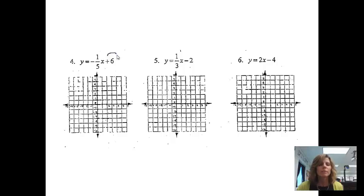Number 4, I'm going to circle the 6. I'm going to start up at 6. The rise is negative 1, so I'm going to go down 1. And then I'm going to run 5. And that is what my graph should look like. Once again, I will go 5 to the right because otherwise my line would be going up and I need it to go down.